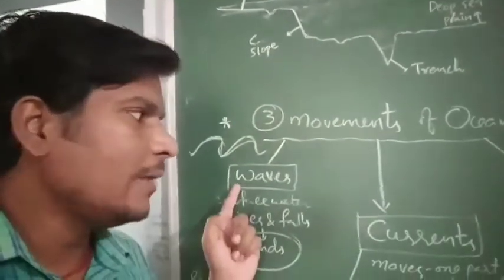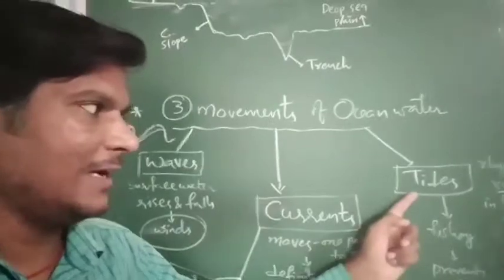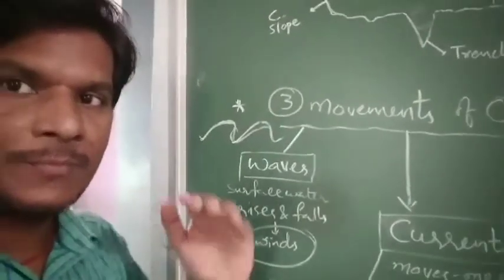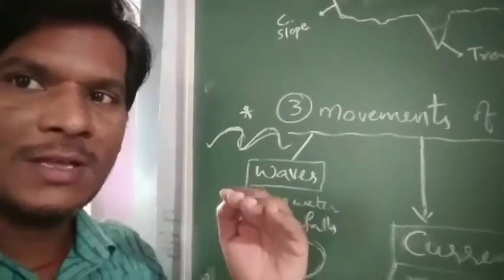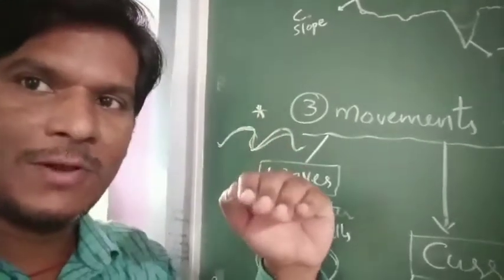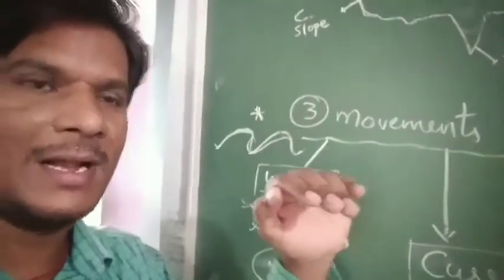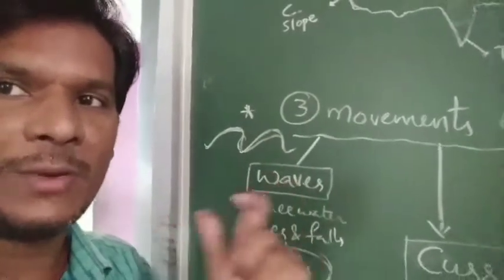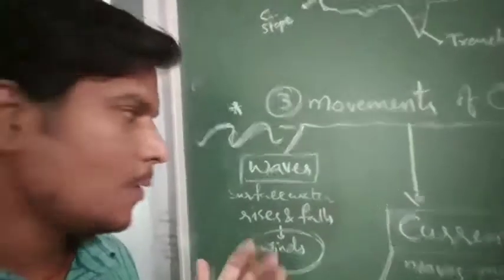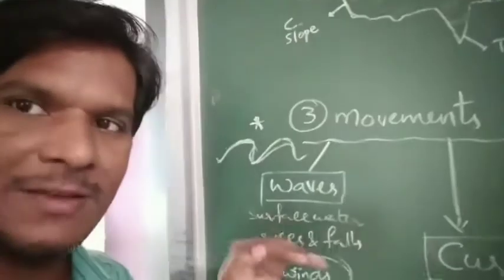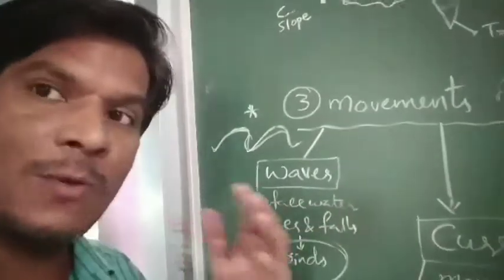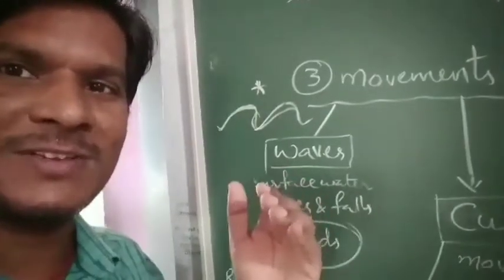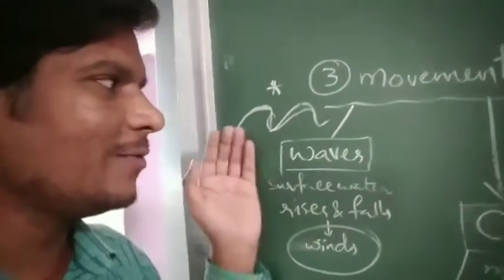Waves are when ocean surface water rises and falls as it moves from one part of the ocean to another, forming a wave shape. But why do waves form? Because of winds — air moving on the ocean surface causes waves to form.